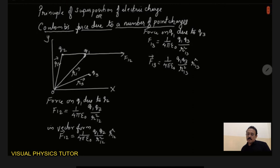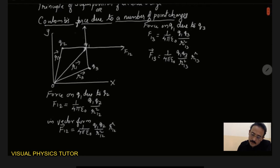So you can see here now the force exerted by q3 on q1 will be in this direction. So now this can be written as F13 vector.